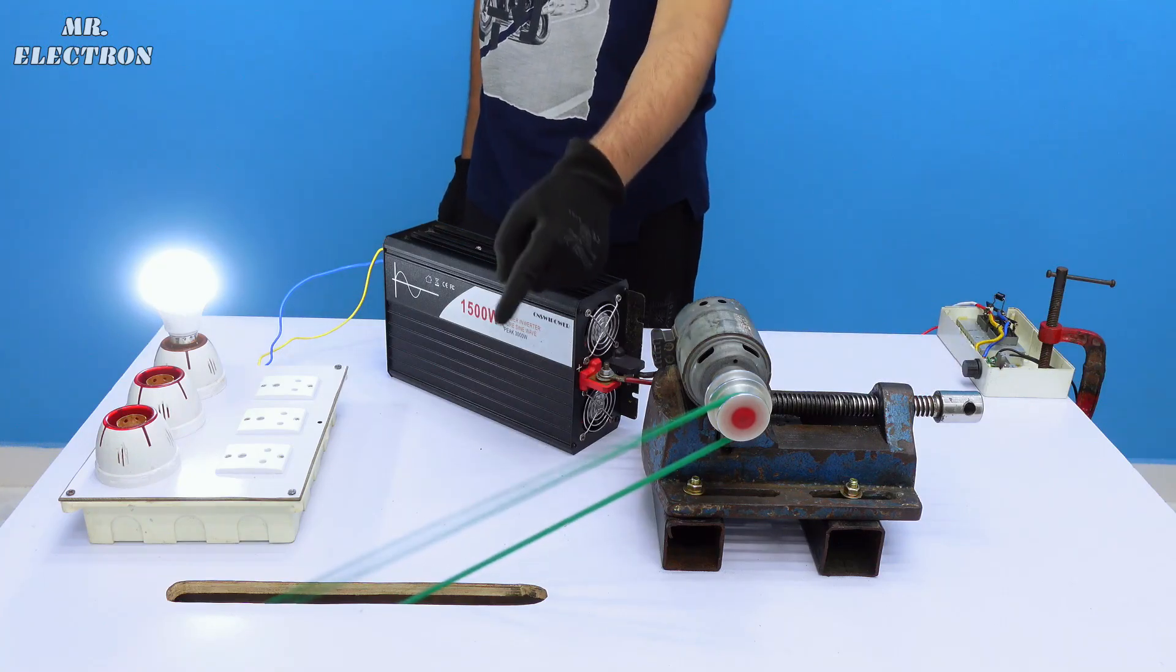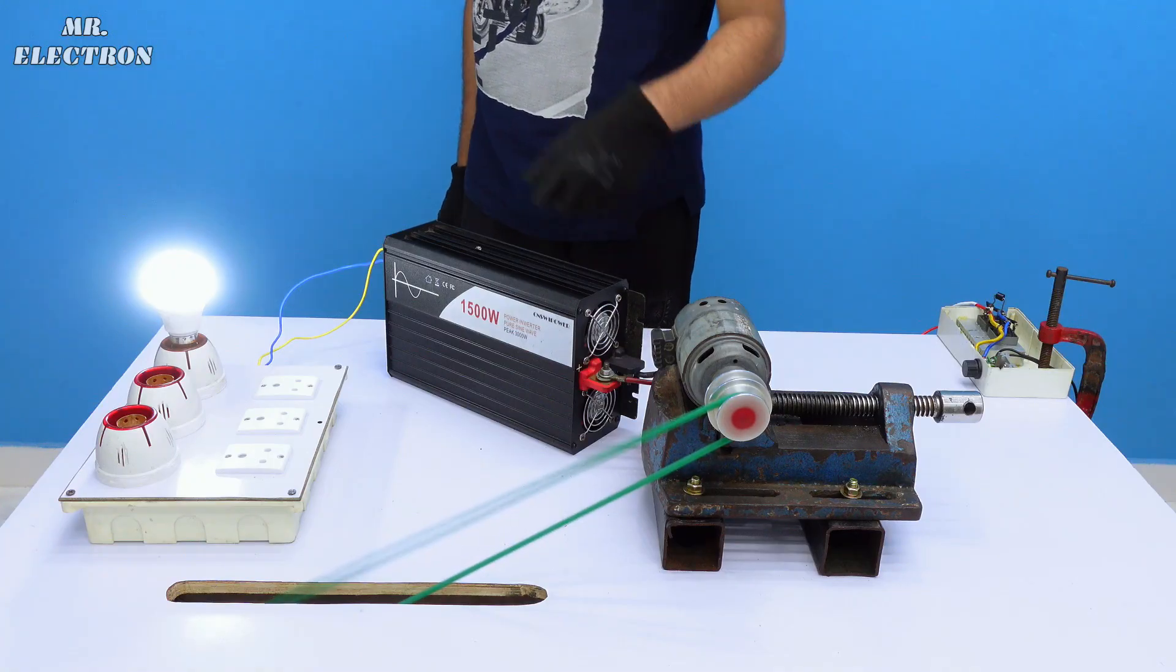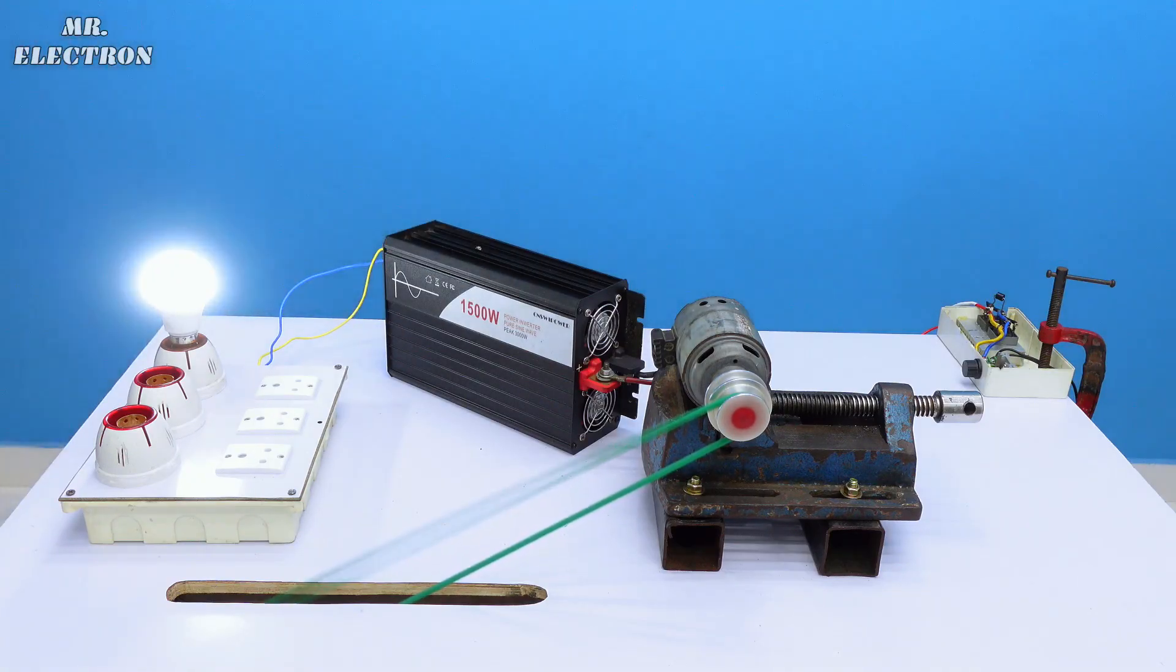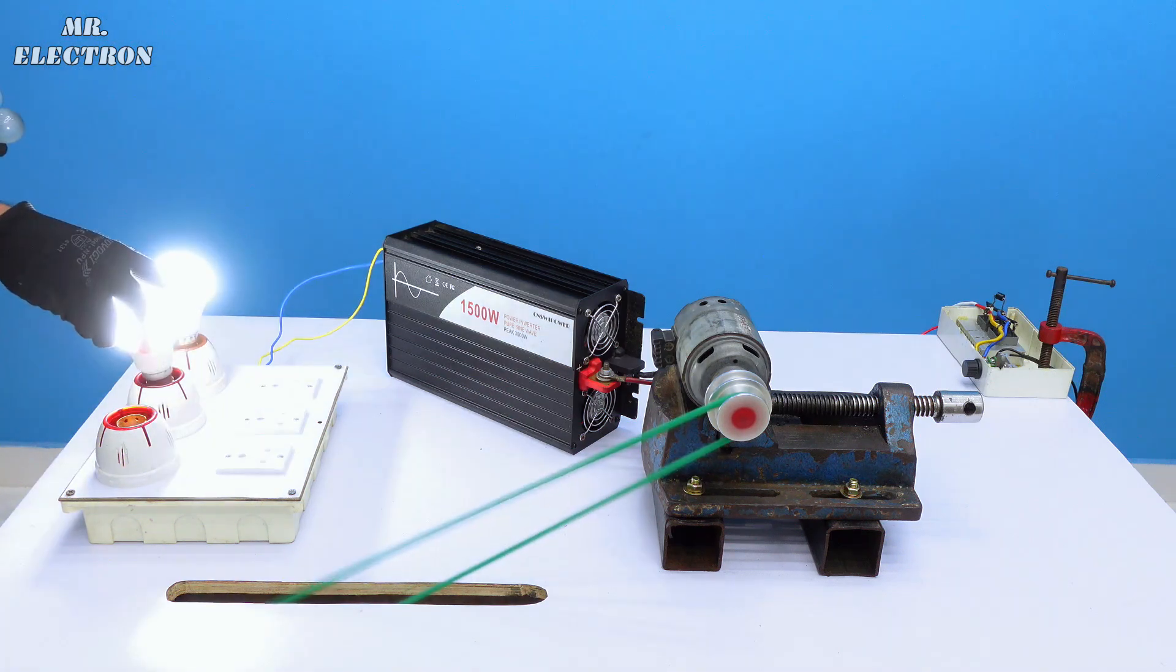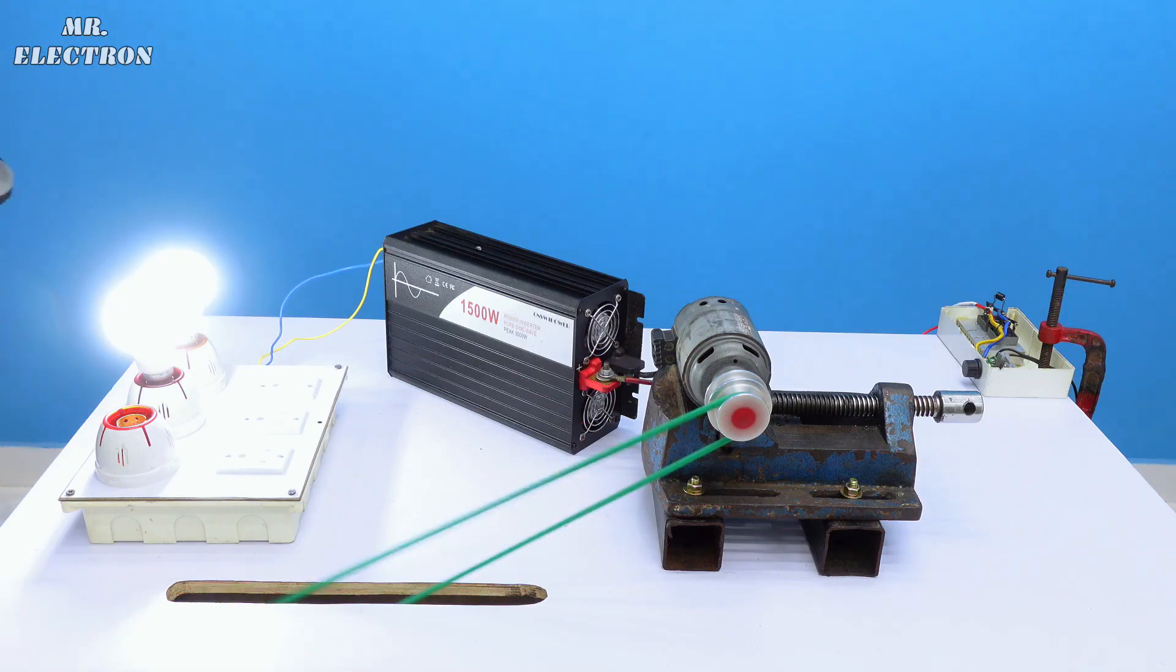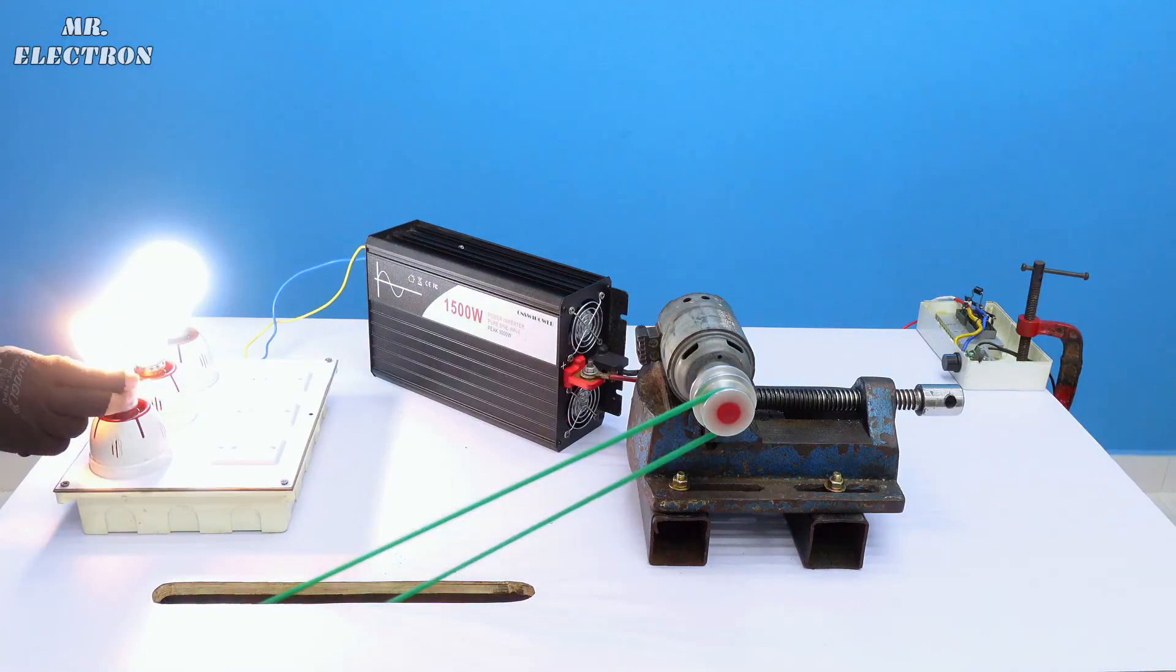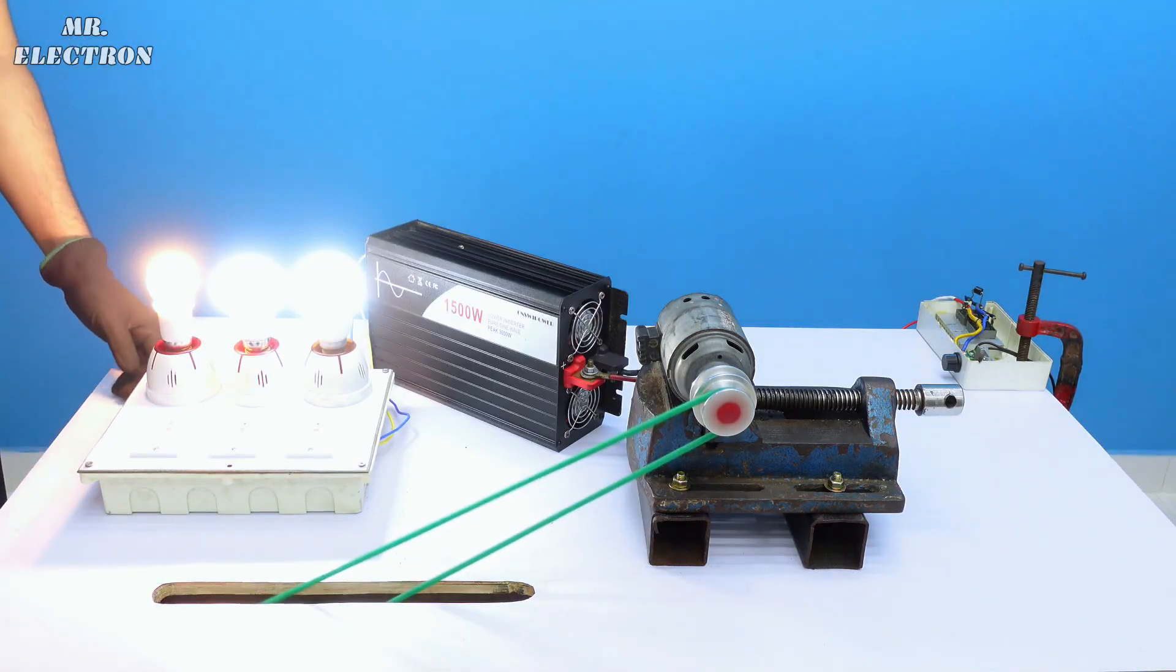Belt is flapping way too much. I'm going to need some side guides, but let's do the test quickly. Another LED bulb. And this is a 60 watts bulb, incandescent. Cool, right?